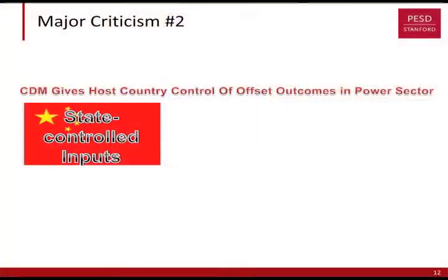Looking backwards at the offset markets, we see that offsets really haven't been the right policy tool to address the types of credits being generated in the market to date. What we found in the power sector is that for all renewable energy in the developing world in the existing offset market, you have state-controlled inputs, which often function in a sort of black-box kind of way.